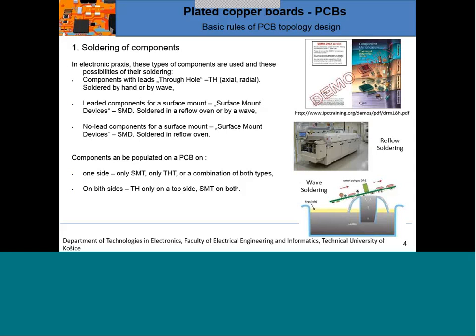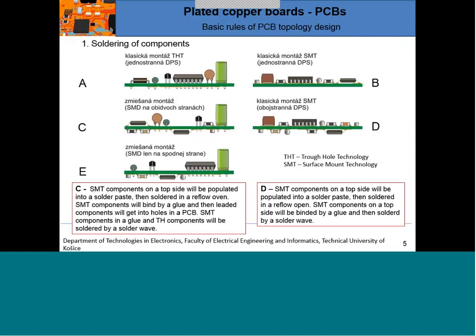Wave soldering is almost the only solution for THT but is not very suitable for SMT components. SMT components can be soldered this way but they must be glued to the PCB, otherwise they would be flushed away. In design case A, a classic THT-only design uses through-hole components from one side, with the PCB single-sided and everything mounted from the bottom.